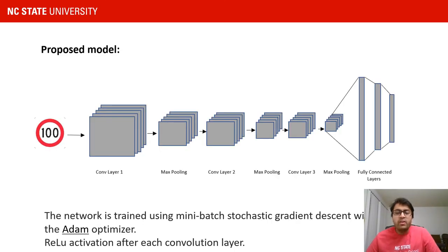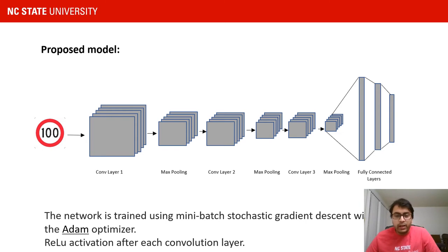Since we are mostly working on images, we are looking to build a CNN model, or convolutional neural network model. We have about three to four convolution layers. Each layer has a ReLU activation followed by max pooling, and the last two layers are fully connected layers, with the last layer being a softmax activation which gives us the probability of each class with respect to all the other classes in the dataset.